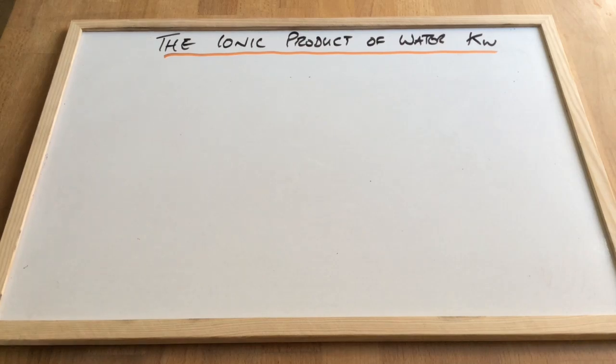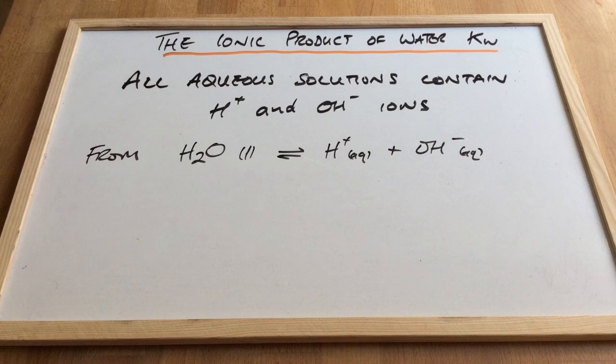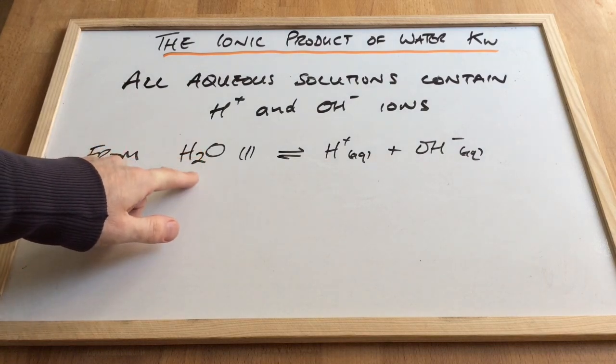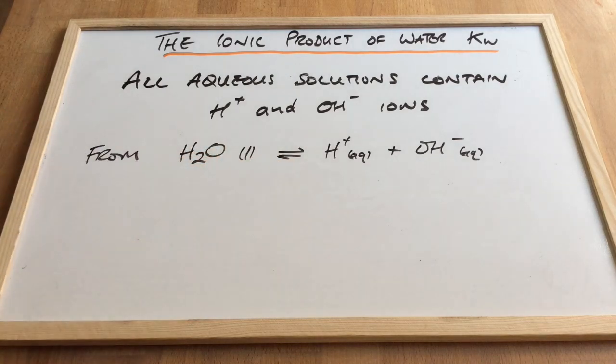In this video I'm going to look at the ionic product of water KW. So we're going to start by saying that all aqueous solutions contain H+ ions and OH- ions. And that comes from the partial dissociation of water. So obviously all aqueous solutions contain water and this will partially ionize into those two ions, so they are both present in an aqueous solution.